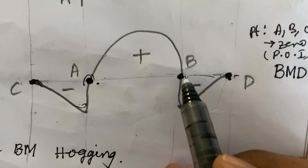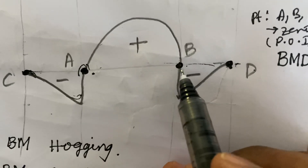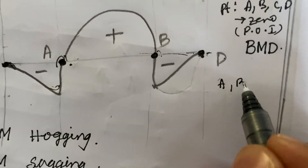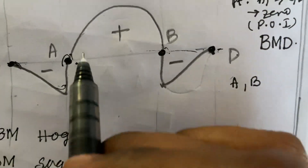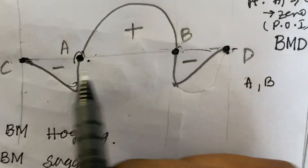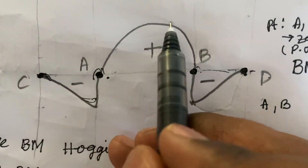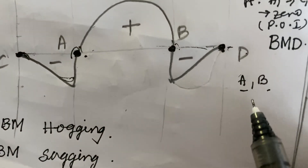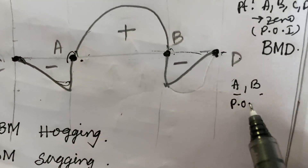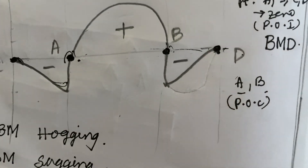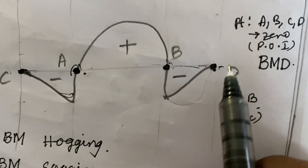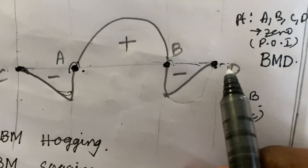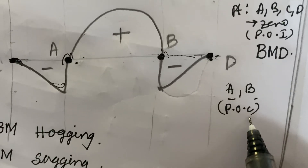These points — A and B — where the bending moment touches zero while moving from negative to positive sign and from positive to negative sign, are the points of contraflexure. Whereas A, B, C, D may all be points of inflection, but C and D do not come under point of contraflexure.